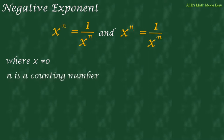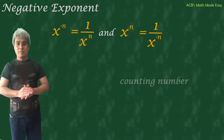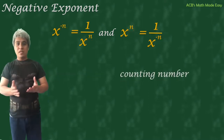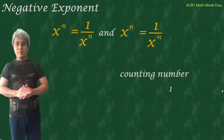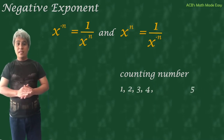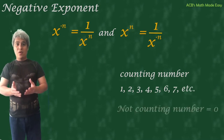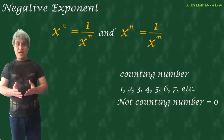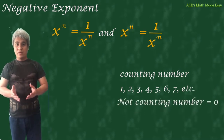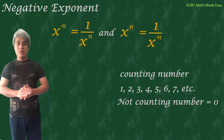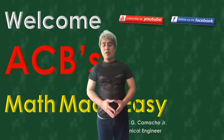But what is a counting number? A counting number is something you can count — for example, 1, 2, 3, 4, 5, etc. Keep in mind that 0 is not a counting number.